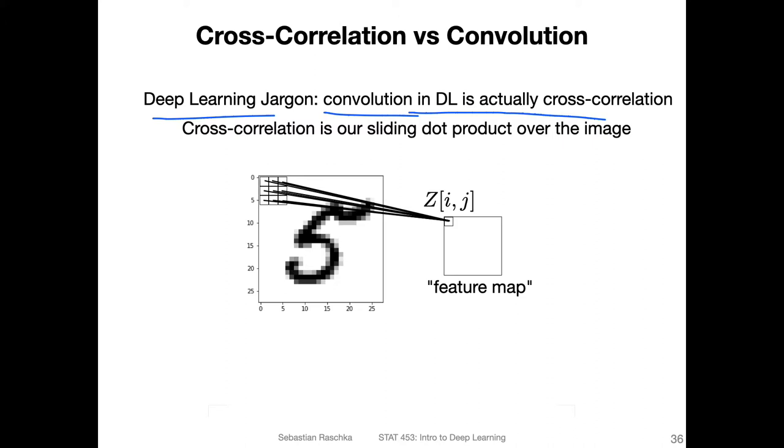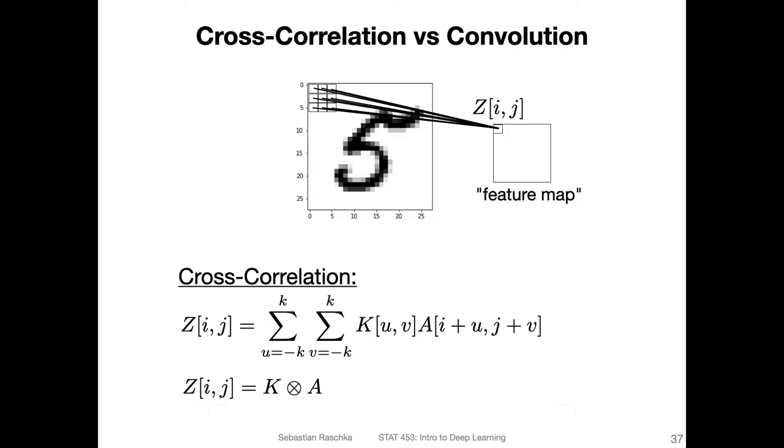So the cross-correlation is essentially the sliding of the dot product over the image. When we have this region, and we multiply the pixels in that region with the weight, the filter, this is essentially a dot product. We do this calculation. But now when we write it down more concretely, we can write this procedure down as a cross-correlation.